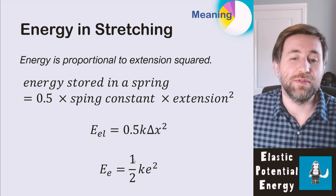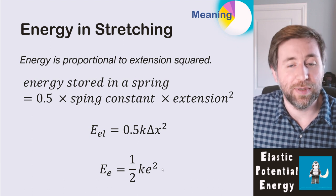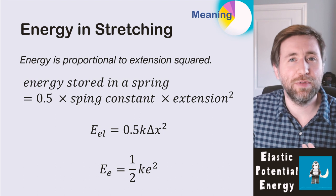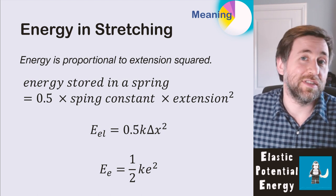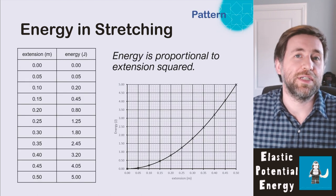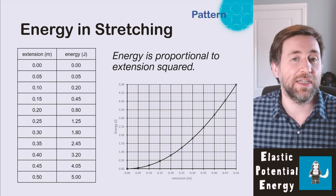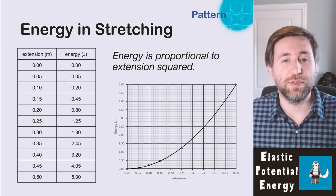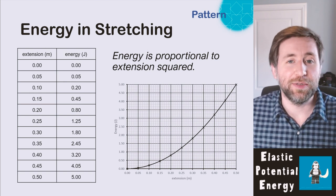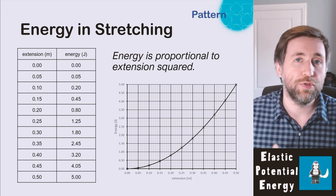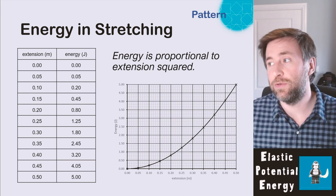In AQA, they write it as E little e equals a half k e squared. I don't like to use a little e because that looks too much like the exponential number, which we use a lot in physics, but these are the same equations — use whichever you're most comfortable with. If we take some extensions and measure the energy from a spring, we can see the relationship that energy is proportional to extension squared. That's a y proportional to x squared relationship: double the extension, you quadruple the energy.